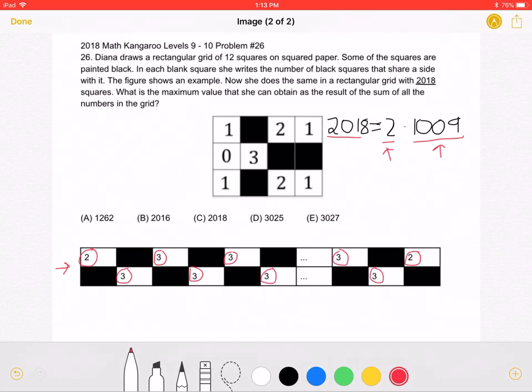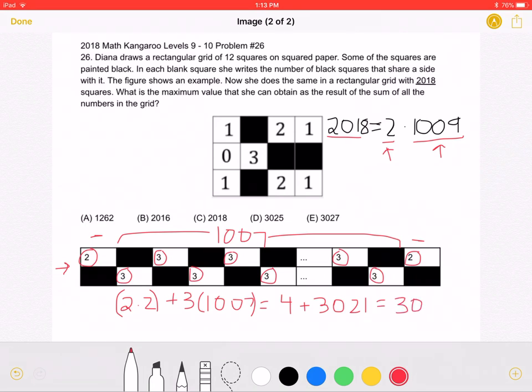To find the sum of this, we could write an equation: 2 times 2, which is the sum of the last two columns, plus 3 times 1,007, as there were 1,007 columns in between the last two, which would be equal to 4 plus 3,021, giving a total sum of 3,025.